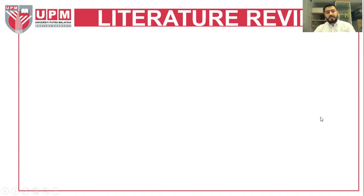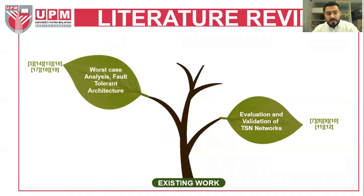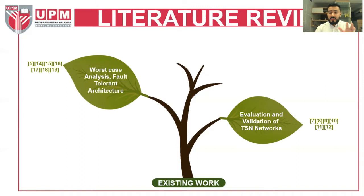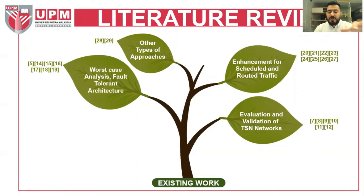Going to the literature review, we reviewed existing work related to time-sensitive networks over the past years, dividing it into four parts. First, papers about evaluation and validation of TSN networks. Second, papers dealing with worst-case analysis and fault-tolerant architectures for TSN. Third, papers making enhancements for scheduled and routed traffic. Fourth, papers with other approaches to enhance scheduling in time-sensitive networks.